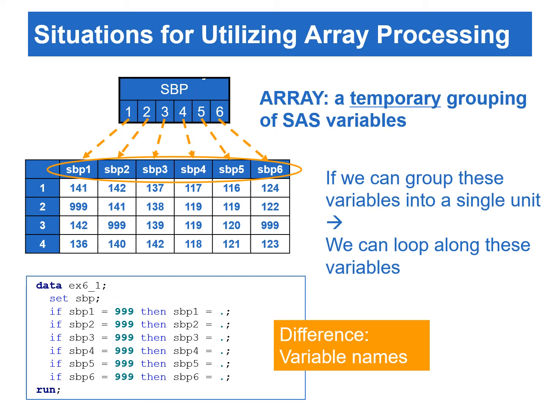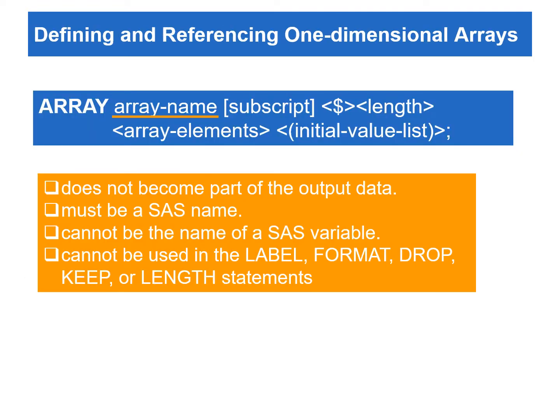An array is a temporary grouping of SAS variables. To group a list of variables into an array, we need to use the array statement. The array name in the array statement does not become part of the output data. The array name must be a legitimate SAS name and cannot be the name of a SAS variable in the same data step.